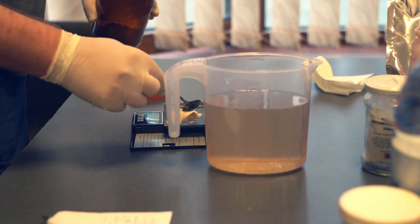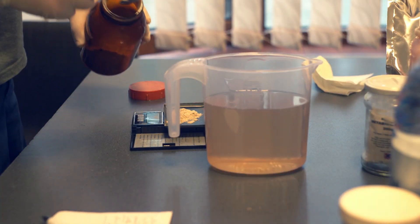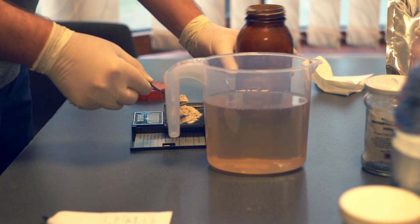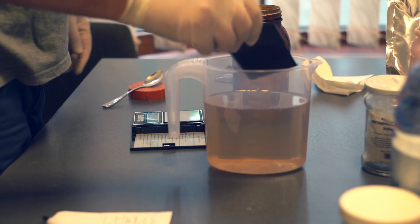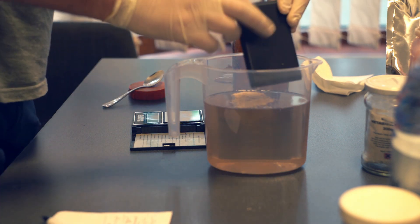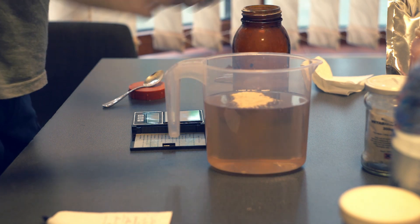2.5 grams of metol is used as a second developer. It is super additive with PyroCat but not so much as phenidone. Dissolving metol in water is a pain in the ass, but adding it after the sulfite greatly improves its solubility.